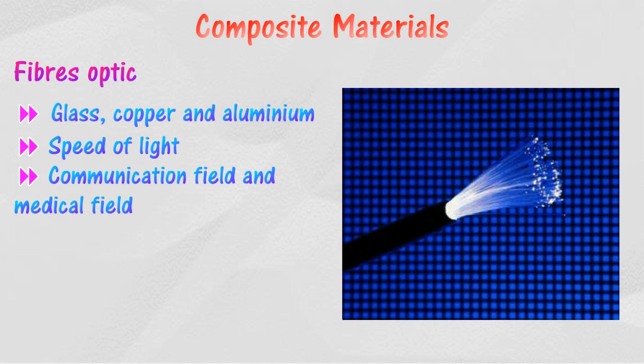Fiber optics are made from glass, copper, and aluminum. It enables information to be transmitted in light form at high speed, and is used in the communication field to make electrical cables, and in the medical field to observe internal organs without performing surgery.